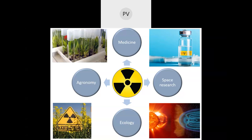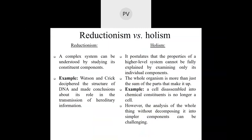There are two approaches currently on how we can study these things: reductionism and holism. Reductionism considers that a complex system can be understood by studying its constituent components — it's a very classical way of studying complex systems. Watson and Crick deciphered the structure of DNA and made conclusions about its role in transmission of hereditary information exactly based on a reductionist approach. On the contrary, the holistic approach postulates that properties of a high-level system cannot be fully explained by examining only its individual components — chemistry is a little bit bigger than just a combination of atoms, biology is a little bit bigger than chemistry, and the whole organism is something more than just the sum of its parts.